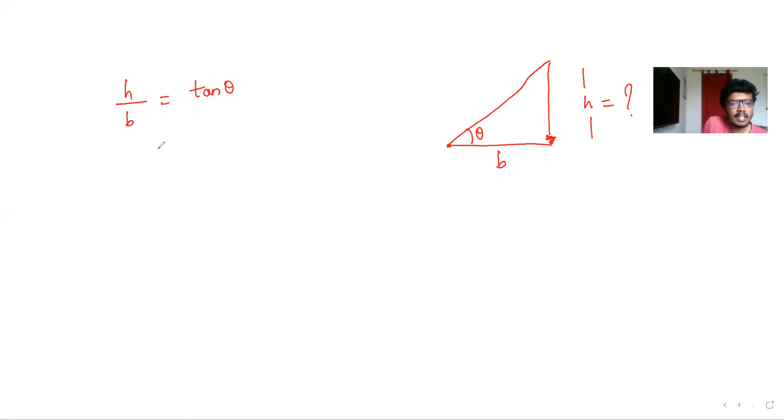So if we were to find h, we get h = b tan θ. So suppose for example θ were 45 degrees and you were at a distance b = 2 meters from the base of the pole.